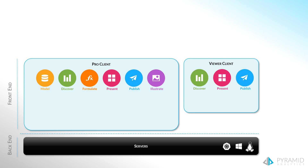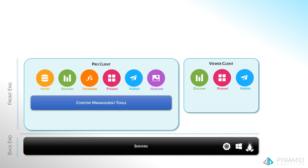The viewer client has a smaller footprint for non-technical users who simply want to consume content created by the more proficient pro users. Both clients include content interfaces. On the pro client, there are numerous content management capabilities and tools, while on the viewer, there is a simpler content explorer.